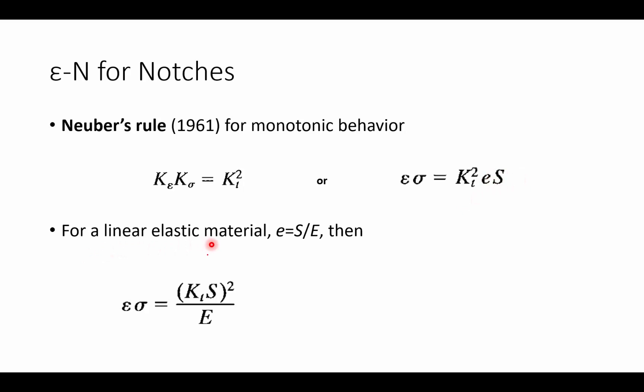We can rewrite this as simply that the strain times the stress—and these are the local values measured at the notch—are equal to K_T squared times E times S, which are our remote loading conditions. For a linear elastic material, let's remind ourselves that E is equal to S over E, so we can revise this relationship as follows: eta times sigma is equal to, in brackets, K_T times S squared over E, the modulus.